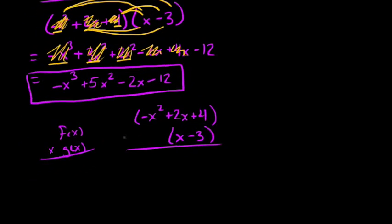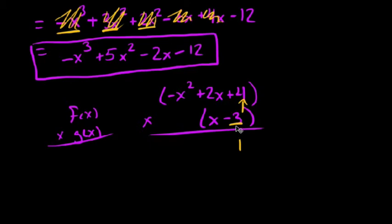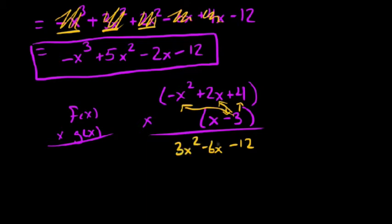Just like with real number multiplication, we start on the right. We have negative 3, so negative 3 times positive 4 is negative 12. Negative 3 times positive 2x is negative 6x. And negative 3 times negative x squared is positive 3x squared. So that's our first row of multiplication, and negative 3 is exhausted.